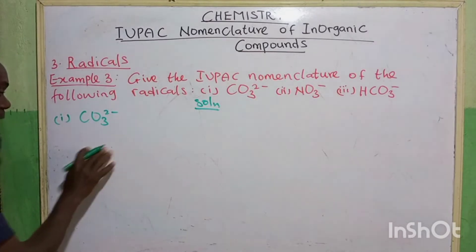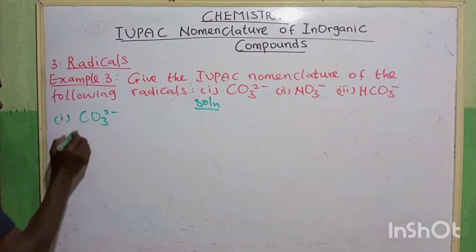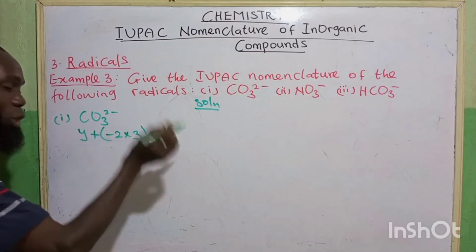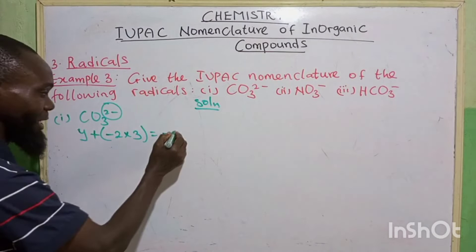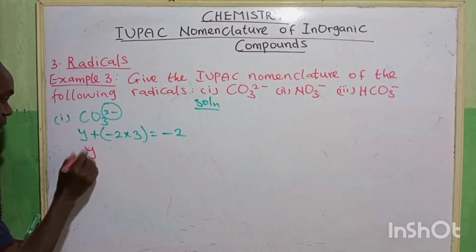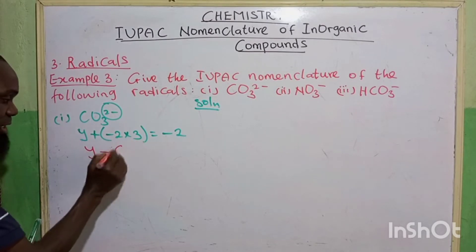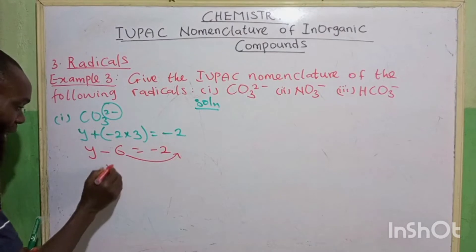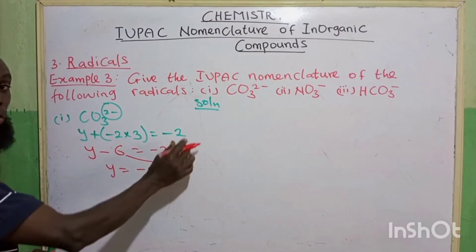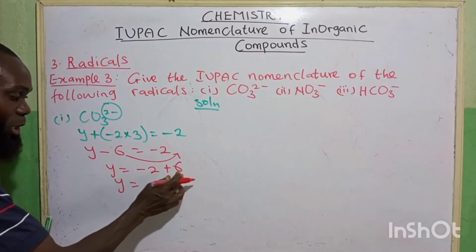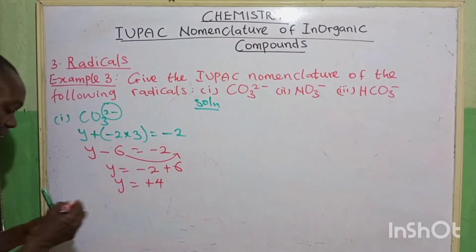So we represent the carbon as a letter Y plus the valency of oxygen is minus 2 multiplied by 3. Then this is going to equal to the charge on it, which is minus 2. So here we have Y plus minus 2 times 3, 6 is equal to minus 2. So collect like terms. Y equals to minus 2. When this minus 6 is coming here, it changes to plus 6. So Y equals to minus 2 plus 6. We have plus 4.